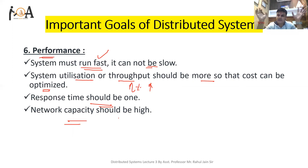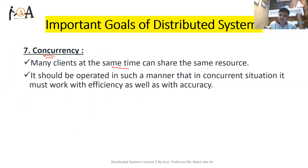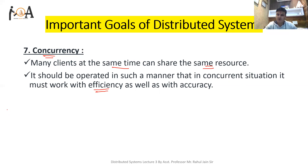The last goal is concurrency. Many clients at the same time can share and ask for resources. In a concurrent environment, the system should behave such that it provides all clients the same resources when asked, with very high accuracy and correct efficiency. These are the seven important goals we have discussed with respect to distributed systems.